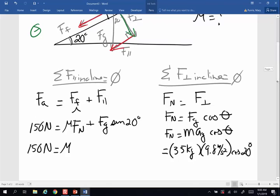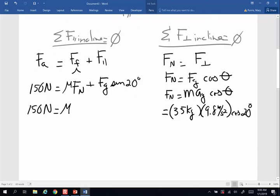So this force is going to be equivalent to, let me pick up my calculator, cosine of 20 times 9.8 times 35, I get force normal is going to be 322 newtons.